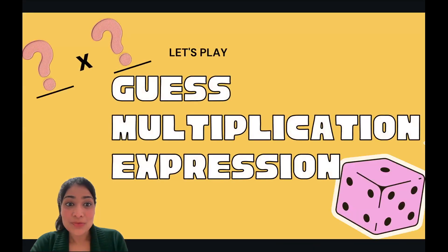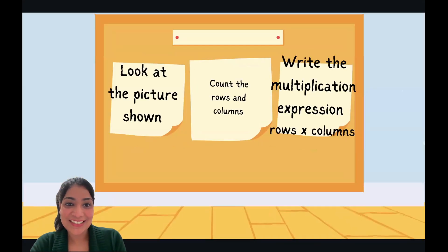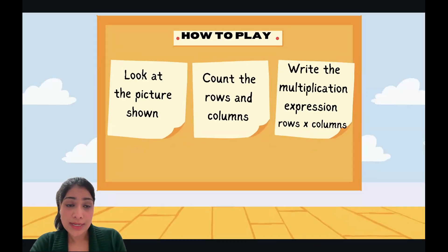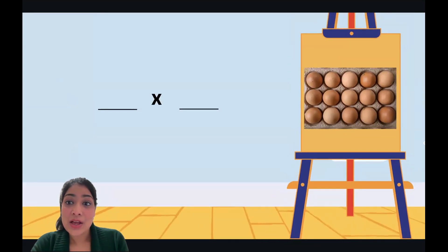Let's play our first game: guess multiplication expression. How to play? Look at the given picture, count the number of rows and columns, and write the multiplication expression for it, like rows times columns.